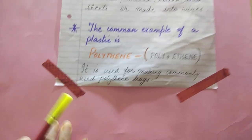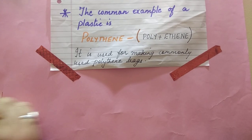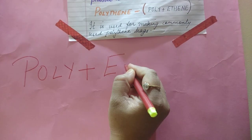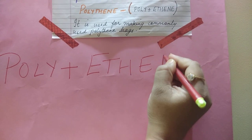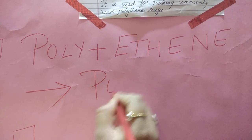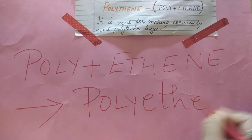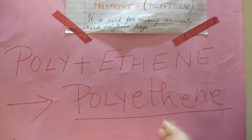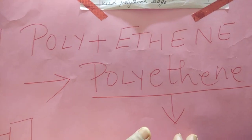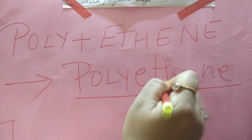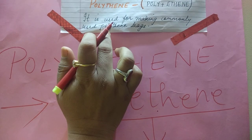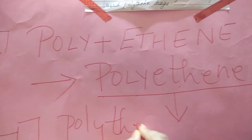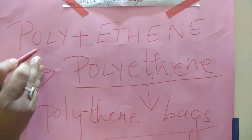A common example of plastic in everyday life is polyethene. Polyethene is commonly used to make polyethene bags. 'Poly' means many, and 'ethene' is a new word here. So polyethene bags are the most common use of polyethene.